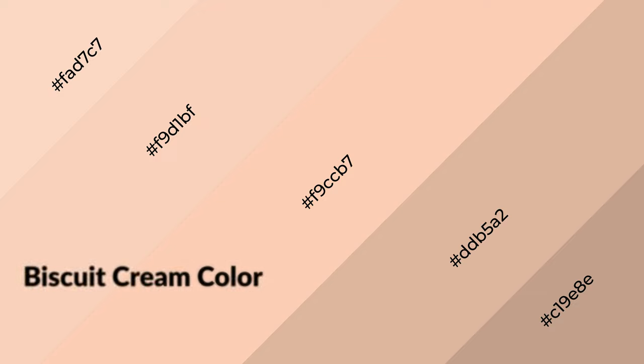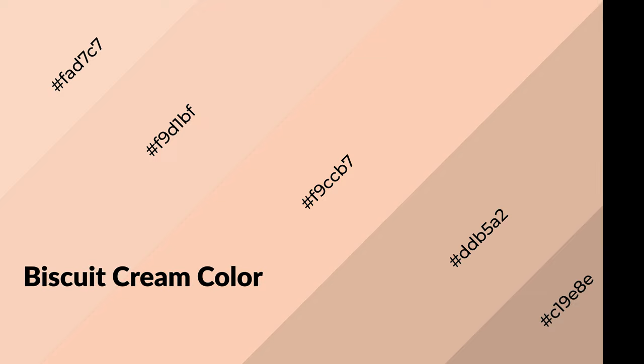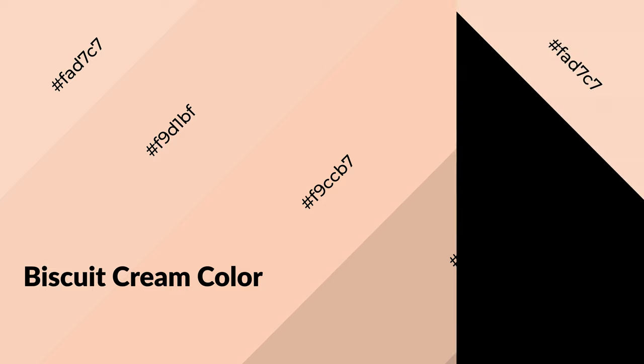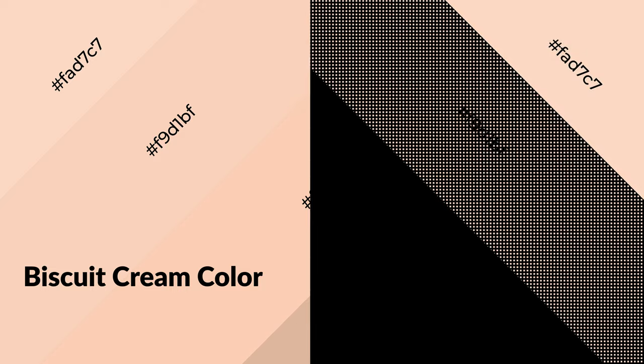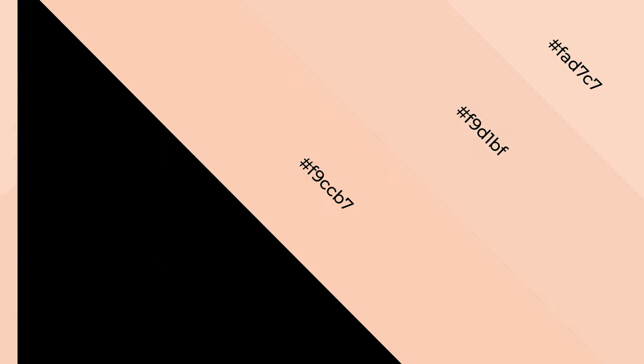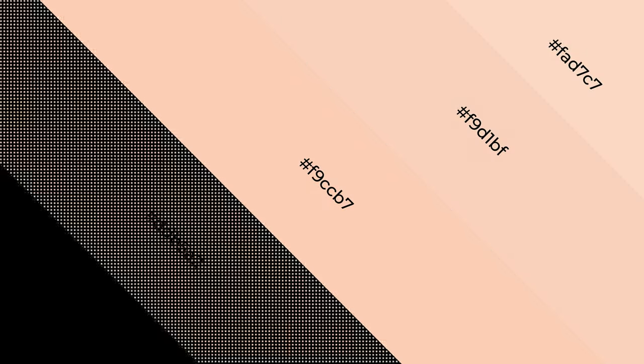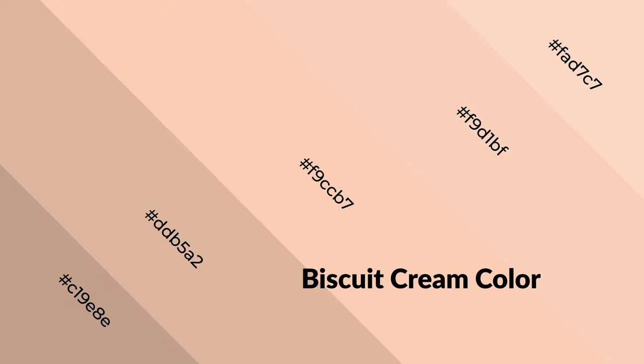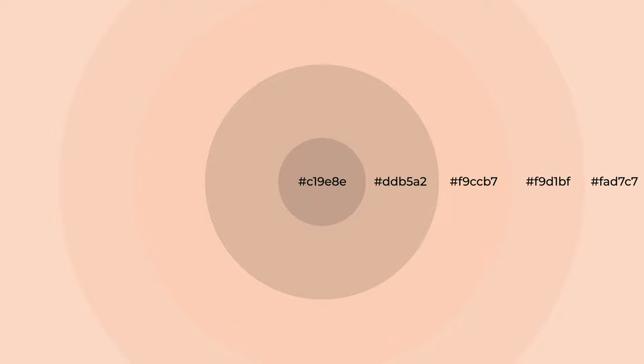Biscuit cream is a warm color and it emits cozier and active emotions. Warm colors are symbols of warmth, fire, heat, and sunshine. It also evokes joy, passion, love, and even anger. You can see them used in restaurants and gyms.